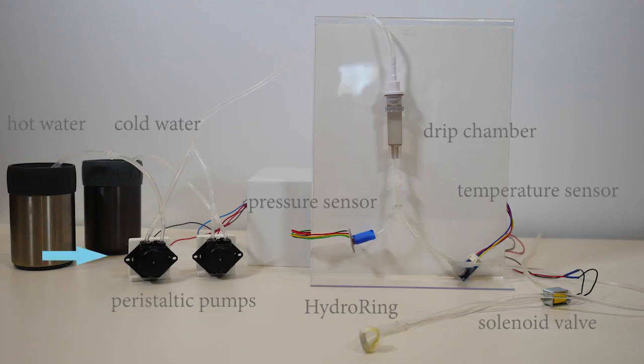Two variable speed peristaltic pumps force water of two different temperatures into a drip chamber where they are mixed and the pressure waves from the peristaltic pumps are dampened.